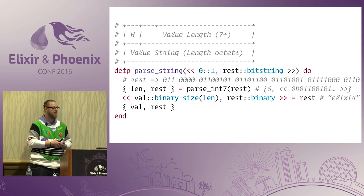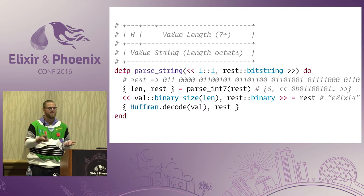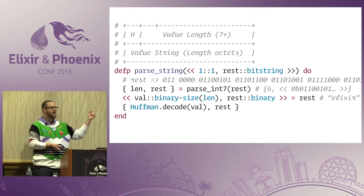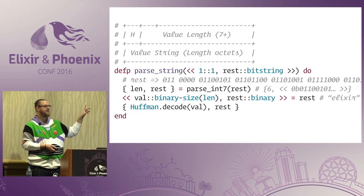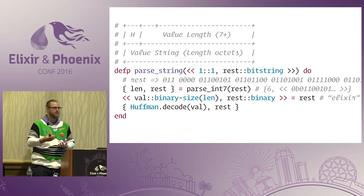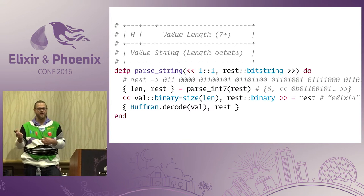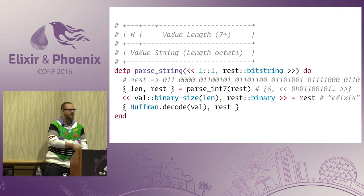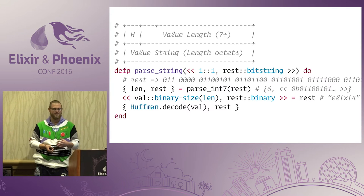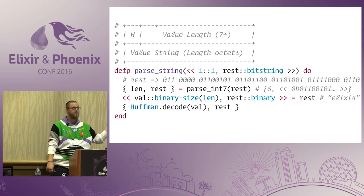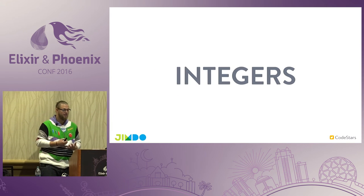For Huffman-encoded strings, it's basically the same code — the only difference is the function header says `1` in the first bit instead of `0`, and before returning the string value, we call `huffman_decode`. The decoding table is specified in the protocol itself — you don't transfer it. If you check out the library, you'll see around 250 lines of table definition. Now let's come to the most complicated part: how integers are encoded.